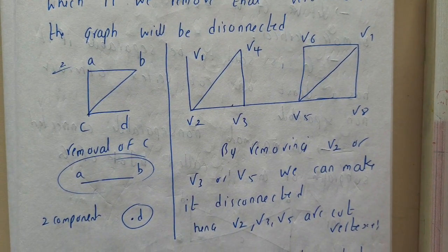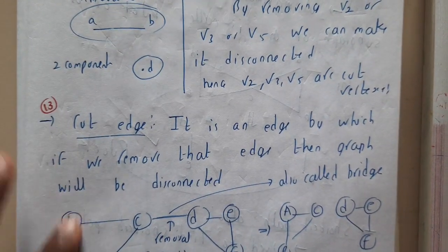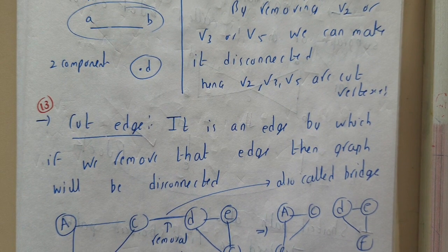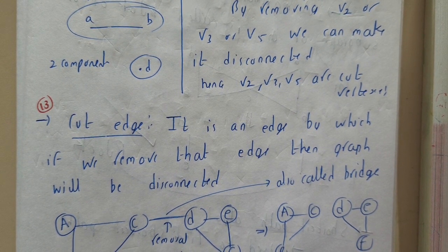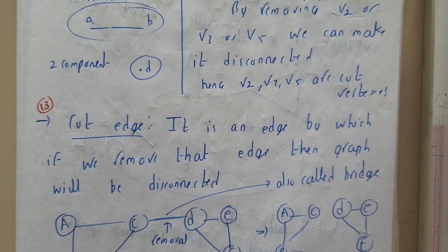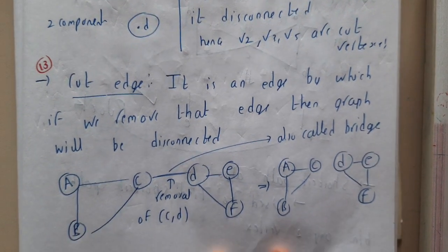So I hope everyone got a clear idea about this cut vertex concept. In the next lecture we'll be going through cut edge. So from the name now you can say that by removing one edge it will become a disconnected graph, simple. Yes, you are true. So let us meet in the next lecture. Let us discuss a small example on cut edge also. Thank you, thanks for watching.